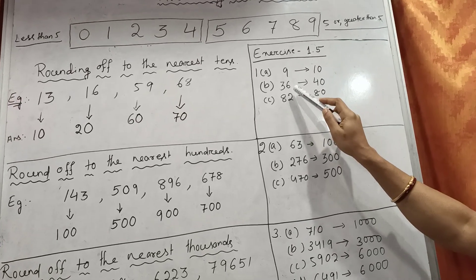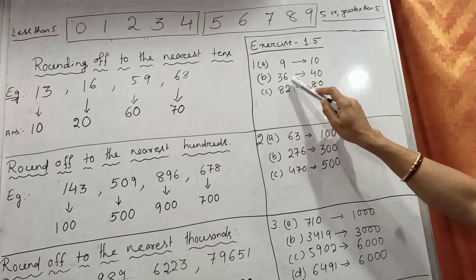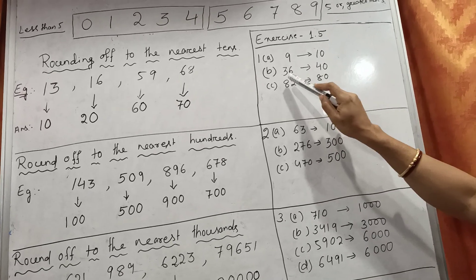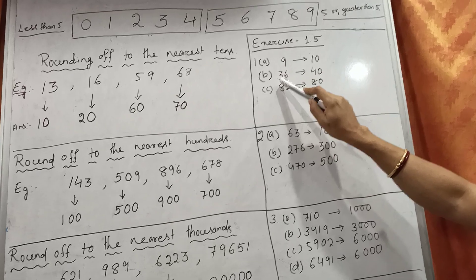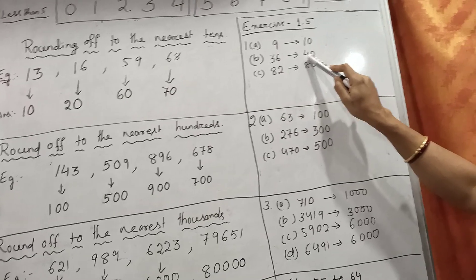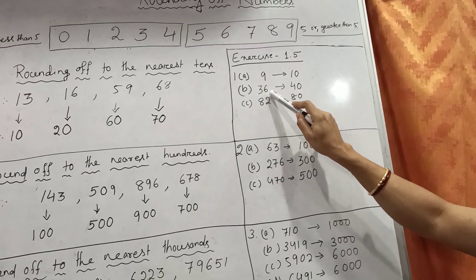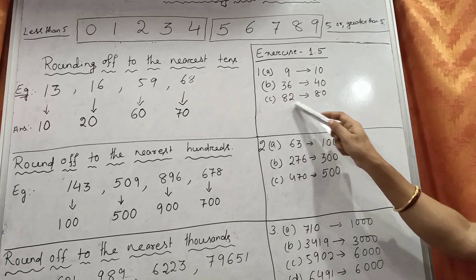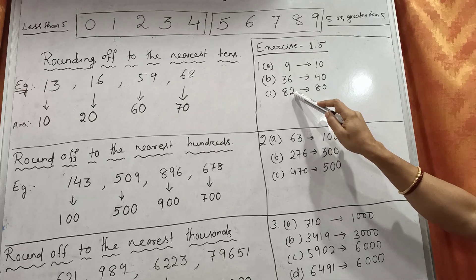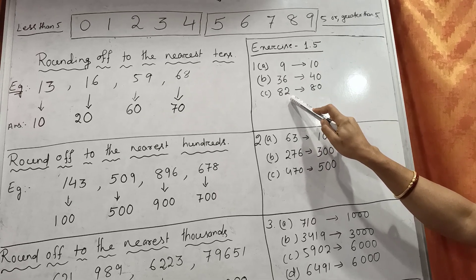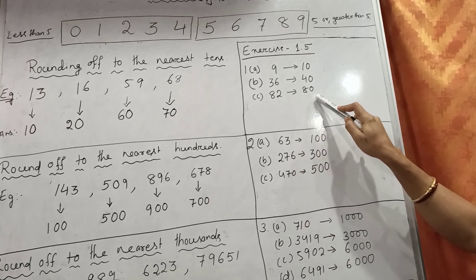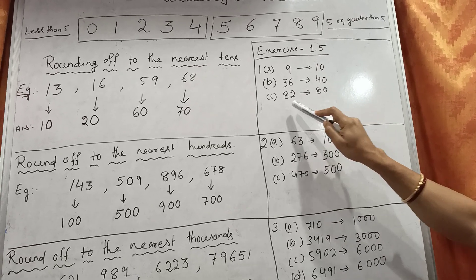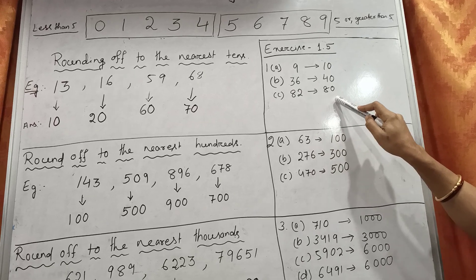The next one is 36. Here 6 is more than 5, so in place of the units digit we write 0, and the tens digit is increased by 1: 3 plus 1 is 4. That means 36 is nearest to 40. The next one is 82. Here 2 is less than 5, so in the units place we write 0 and the tens digit remains the same. That means 82 is nearest to 80.